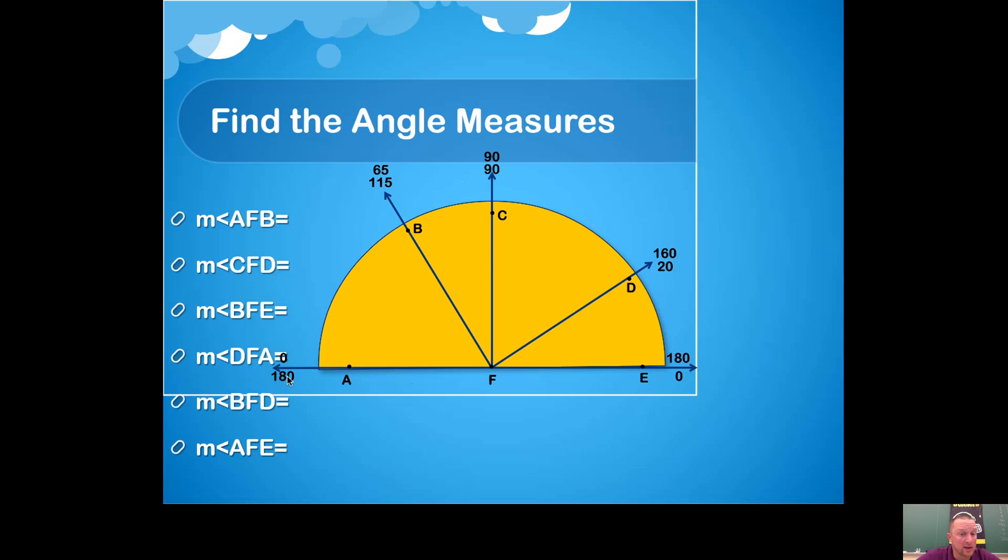So every single ray that goes through a spot on a protractor is going to have two numbers associated with it. You really only need one of the numbers though, and then you can decide which number you want to use. You can either use the top or the bottom. It's totally up to you. So we'll do one example just to get the feel for how you would use this protractor postulate.